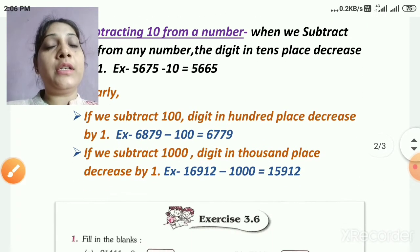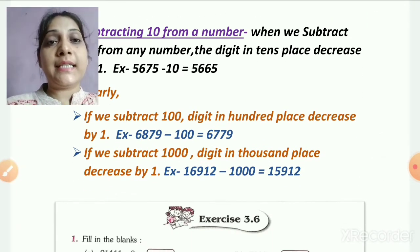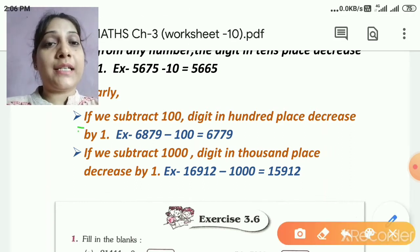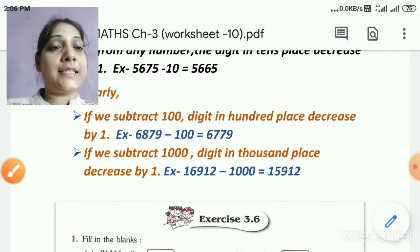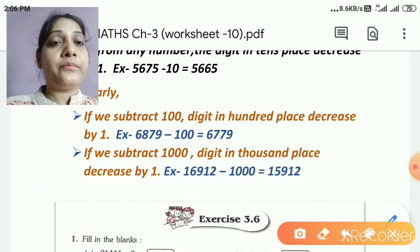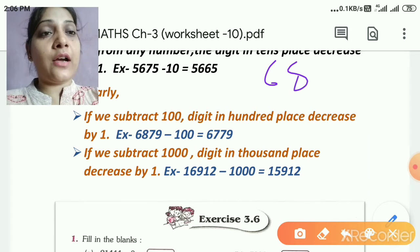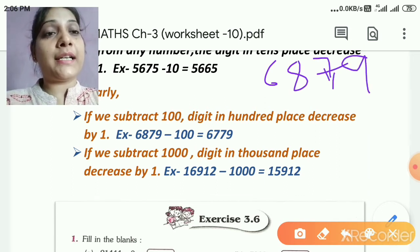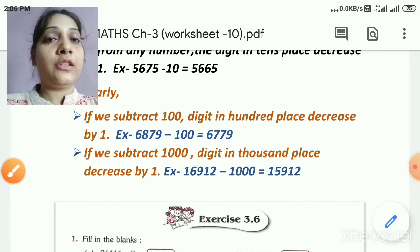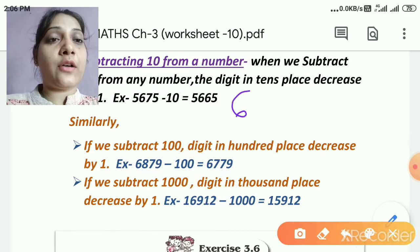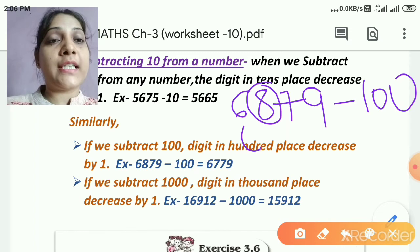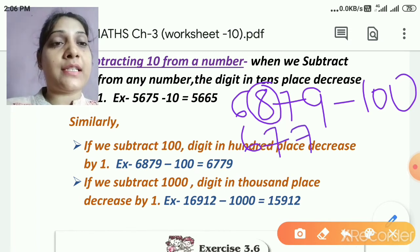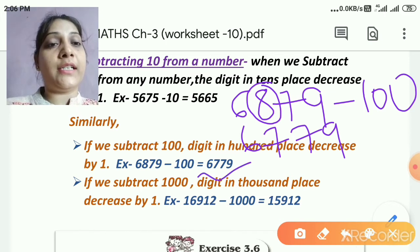Now let's move to another rule. Just as we subtracted 1 and 10, we can also subtract 100. When we subtract 100, the digit in the hundreds place decreases by 1. Take the example 6,879 minus 100. Look at the hundreds place — 6 and the thousands digit 6 stay as they are, then 8 in the hundreds place decreases by 1 to become 7, and the 9 stays. So 6,879 minus 100 equals 6,779.